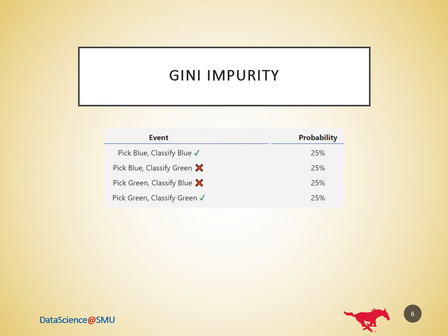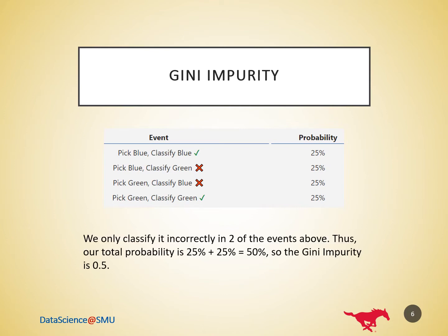Let's calculate the Gini impurity of our entire dataset. If we randomly pick a data point, it's either blue 50% or green 50%. We randomly classify our data point according to the class distribution. Since we have five of each color, we classify it as blue 50% of the time and as green 50% of the time. We only classify it incorrectly in two of the events shown in this table. Thus, our total probability is 25% plus 25% equals 50%, so the Gini impurity is 0.5.